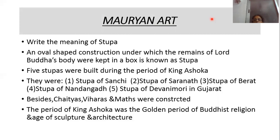During the time of King Ashoka, five Stupas were built. They were: the Stupa of Sanchi, Stupa of Sarnath, Stupa of Beret, Stupa of Nandangat, and Stupa of Devanimori in Gujarat.